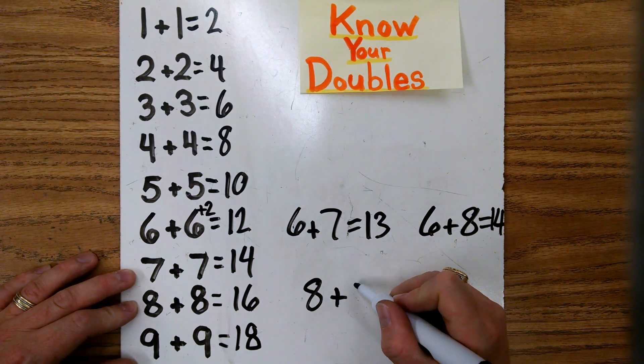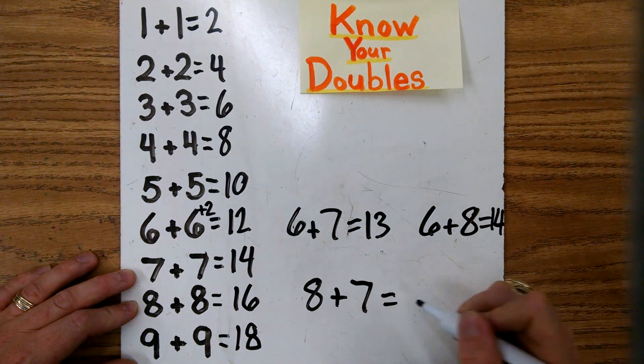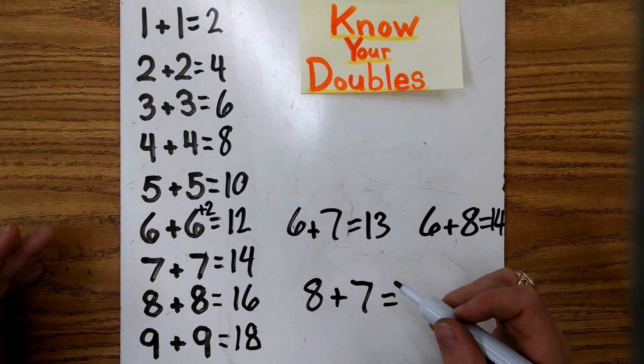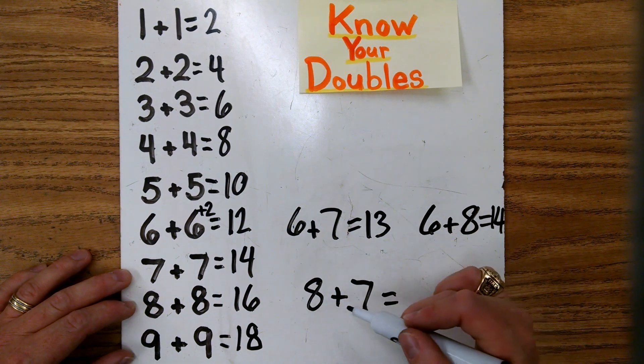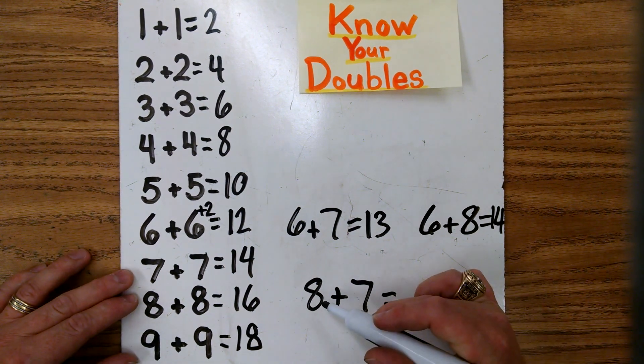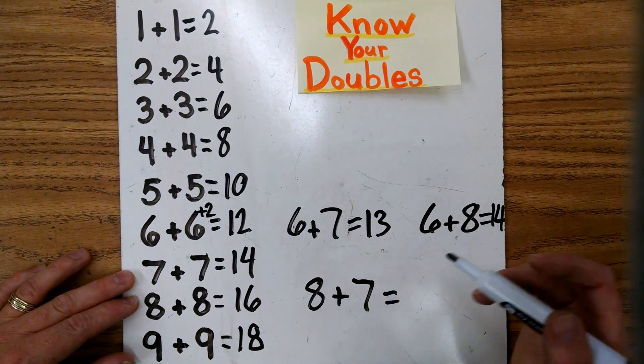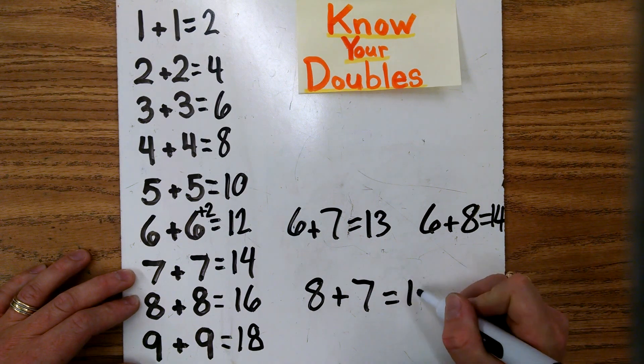Let's go 8 plus 7 equals. So let's say you know, all right, 7 plus 7 gives you 14. 8 is one more. It's 15.